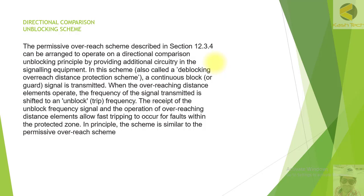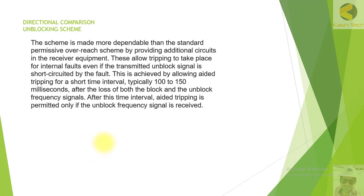In earlier implementations using power line carriers, a guard frequency continuously blocked the relay from operating. As soon as the remote end does not see a fault in the reverse direction, this blocking is removed and the relay can operate. The scheme is made more dependable by allowing tripping to occur for internal faults even if the transmitted unblocked signal is short-circuited by the fault — achieved by allowing added tripping for a short time interval, typically 100 to 150 milliseconds, after the loss of both block and unblocked frequency signals.